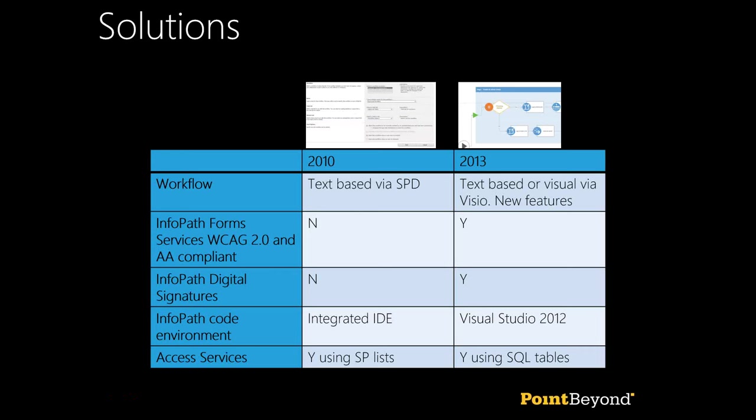There have been improvements to InfoPath — InfoPath Forms Services is now much more mobile-compliant, and there's support for digital signatures. One thing deprecated: the coding environment in InfoPath is gone; you now need Visual Studio to write code in InfoPath. Access Services allows you to take an Access database and publish it to SharePoint — a significant change here is that instead of unpacking Access tables into SharePoint lists, it now unpacks them into SQL Server tables, giving a much more scalable and accessible platform. Access Services is definitely an area to watch.